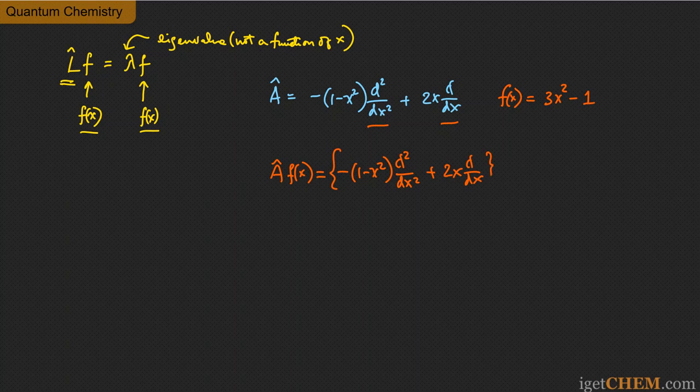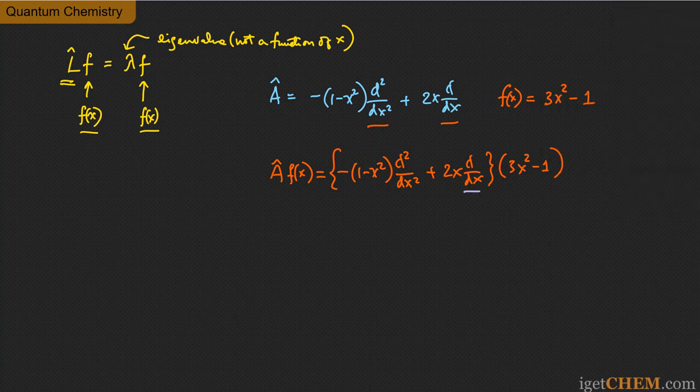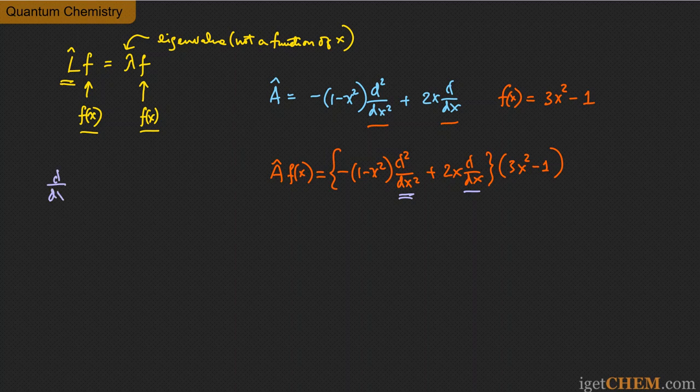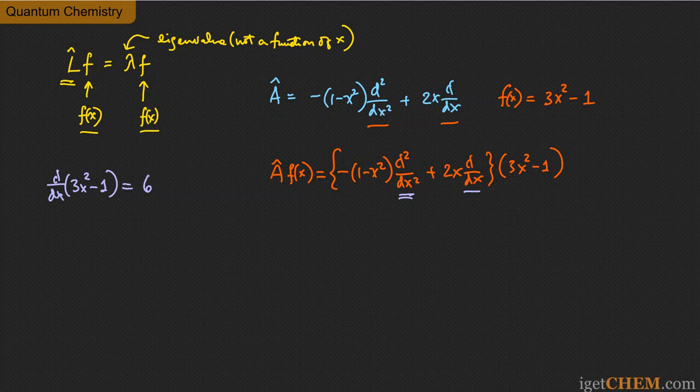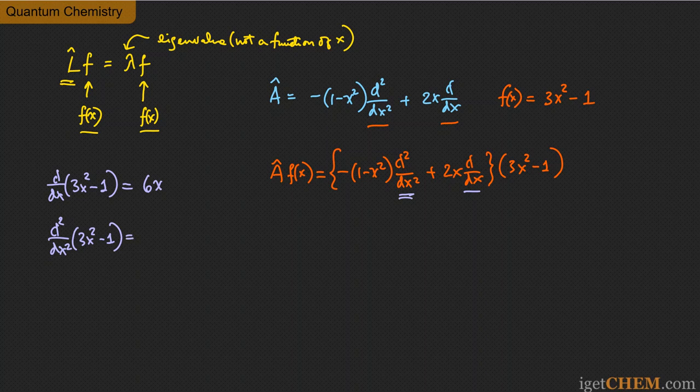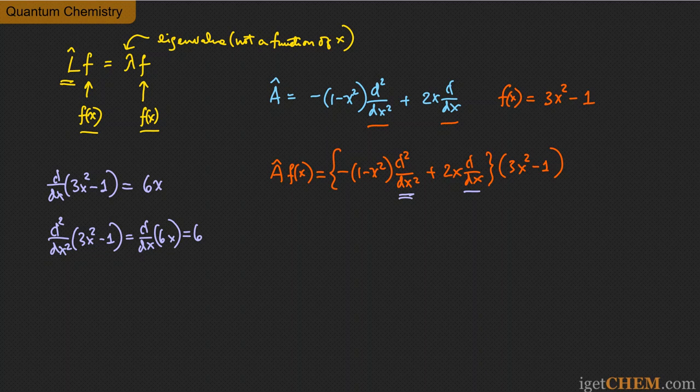A has two derivatives that you have to perform on the function f. A operated on f(x) is just -(1 - x²)(d²/dx²) + 2x(d/dx) operating on 3x² - 1. You notice that there are two derivatives that we have to perform, the first and the second derivative. Let's do those first because we can just put those into the equation. First, d/dx of 3x² - 1 is pretty easy, just 6x. And then d²/dx² of 3x² - 1 is just d/dx of 6x, and that is also simple—it's just 6.